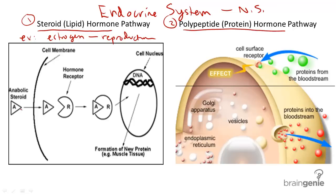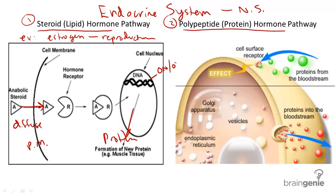The important thing to remember about steroid hormones is that they diffuse directly through plasma membranes to induce production of new proteins, or to turn certain genes on or off. Think of steroid hormones as being pretty direct, since they can directly diffuse through the plasma membranes.